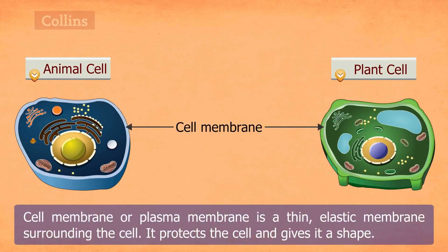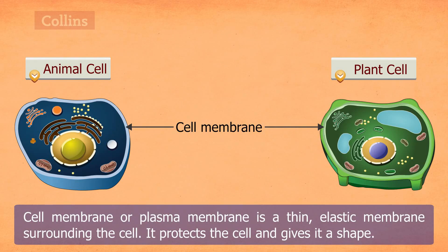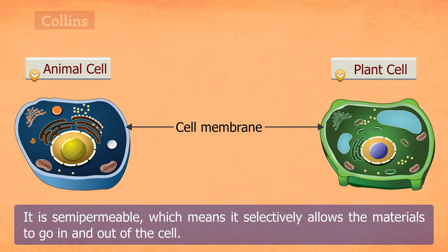Cell membrane, or plasma membrane, is a thin elastic membrane surrounding the cell. It protects the cell and gives it a shape. It is semi-permeable, which means it selectively allows materials to go in and out of the cell.